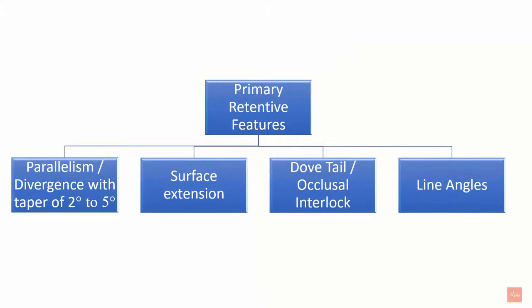First, we will see primary retentive features. The first is parallelism or divergence — divergence of the walls of the cavity towards the occlusal surface with a taper of 2 to 5 degrees increases retention. Second is surface extension — the more the surface extension of the restoration, the more is the retention. Third is dovetail or occlusal interlock. The fourth is line angles — the line angles of the cavity preparation should be well defined.